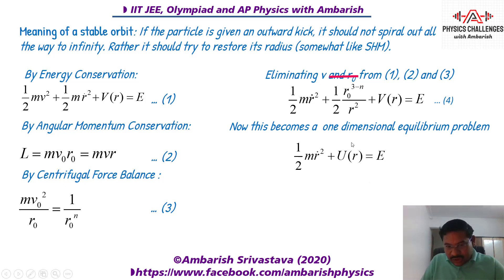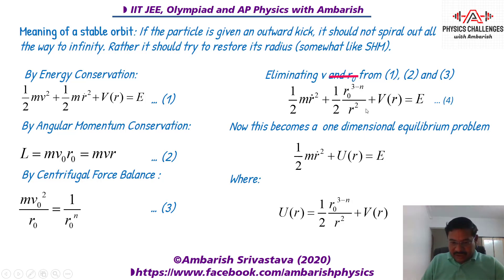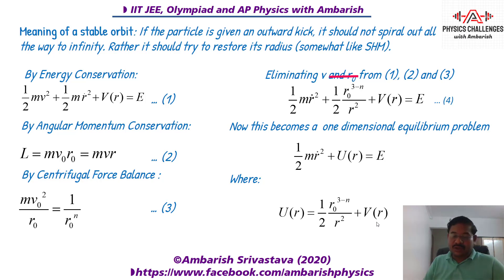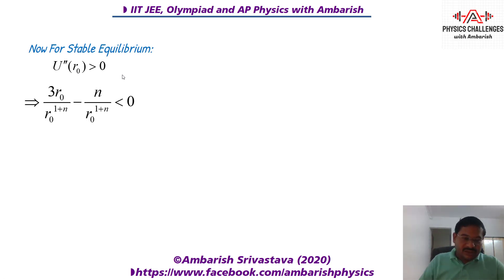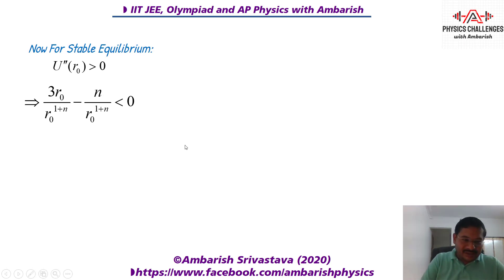Now it's a simple problem. We know U(r) — V(r) is known indirectly because the derivative of V(r) is 1/rⁿ as given. Combining the terms, this is U(r). For stable equilibrium, U(r) should represent a valley, so U''(r₀) = d²U/dr₀² must be greater than zero. Differentiating the function U(r) from the previous step and simplifying, we get the answer.